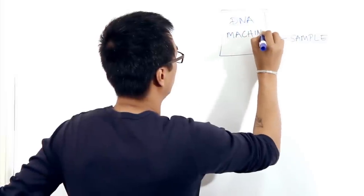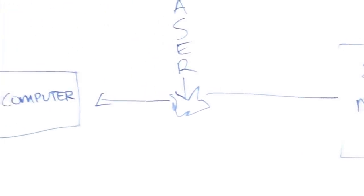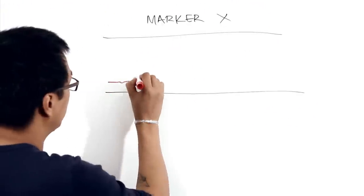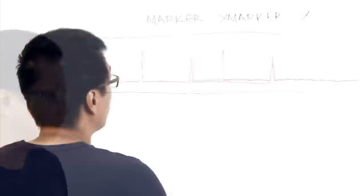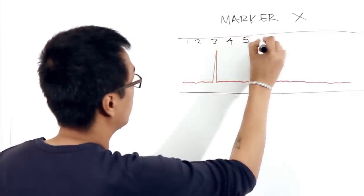The sample goes into a machine, results are read by a laser after going through a capillary tube, and is interpreted by a computer. So the laser in the machine actually measures which markers are present and how much amplified DNA we have.